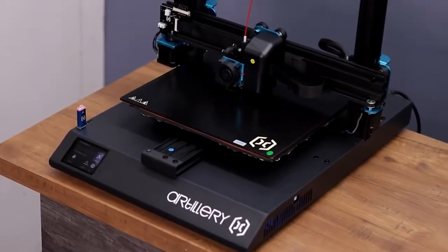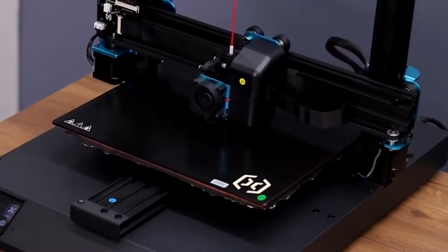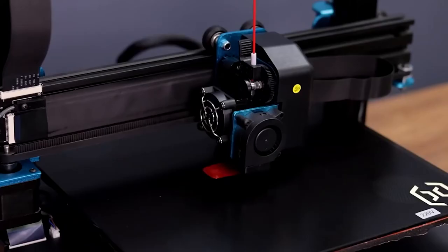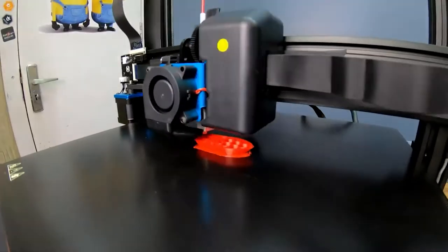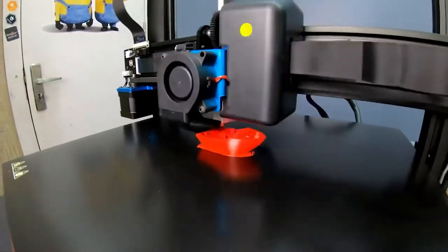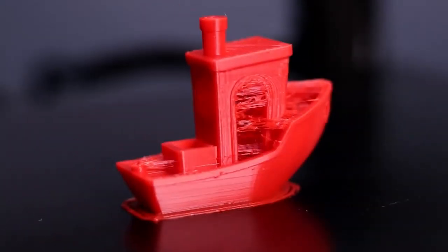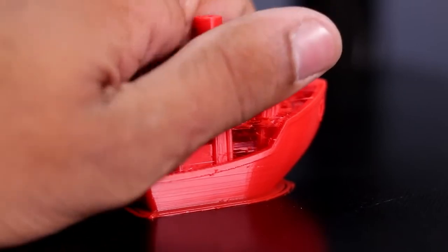As usual we will print the 3D Benchy boat for the first print. Okay, so the boat is complete and it looks good, but there is so much extra material inside so it's very hard to remove.